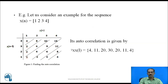Let us take an example to find the autocorrelation of a signal. x[n] = {1, 2, 3, 4}. We write x[n] in the first row and x[n - l] in the column in time-reversed format. The first element in the column will be multiplied with the first element of the row: 4 × 1 = 4.